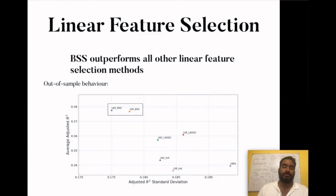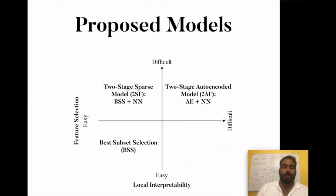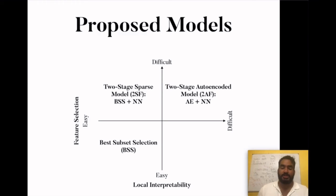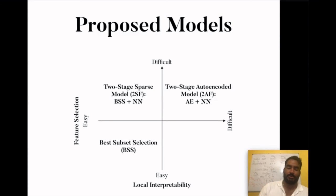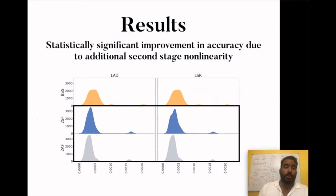Out of sample, best subset selection also performs better and more consistently in terms of adjusted R-squared, accounting for the number of factors used. We wind up with three models: for linear feature selection, we use best subset selection; for the other two, we first apply best subset selection and then train a neural network using only those factors; for the two-stage autoencoder model, we train autoencoders, discard the decoders, and pass the latent factors into a feedforward neural network. We found statistically significant improvement in accuracy from the second-stage nonlinearity, but not from the first-stage nonlinearity of the autoencoder.